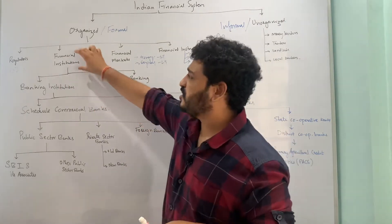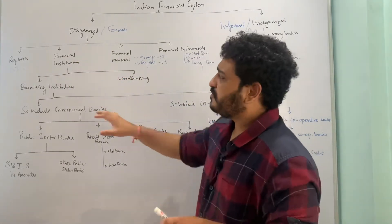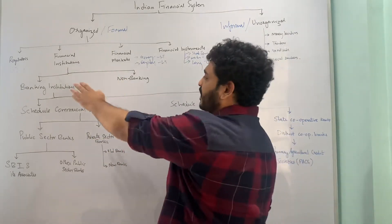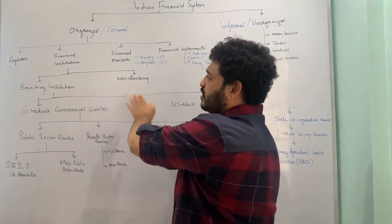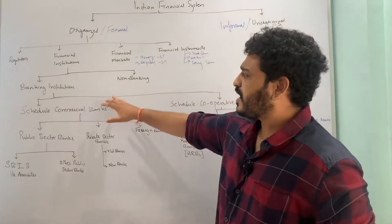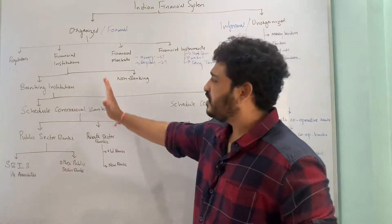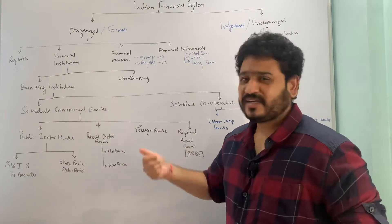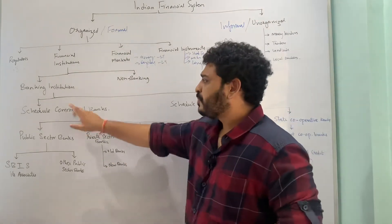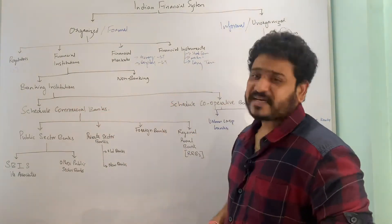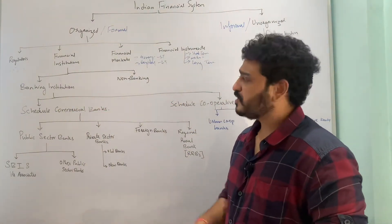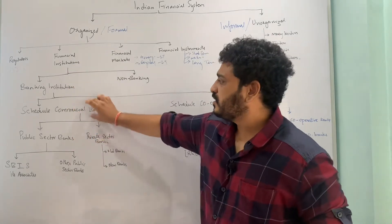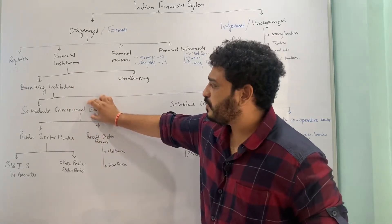Now we are going to look at only financial institutions in this class. Financial institutions are further classified into banking institutions and non-banking institutions. Today I'll be talking about only the banking institutions. The first distinction or sub-classification with respect to banking institutions is scheduled commercial banks and scheduled cooperative banks.